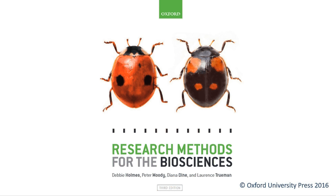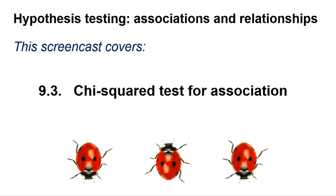Hello, welcome to another Research Methods for the Biosciences screencast for Minitab. This screencast covers section 9.3 chi-squared tests for association.